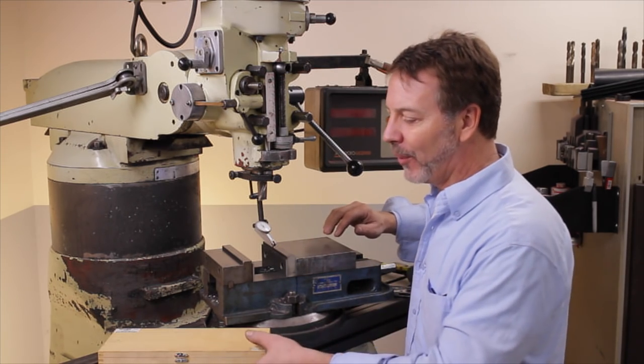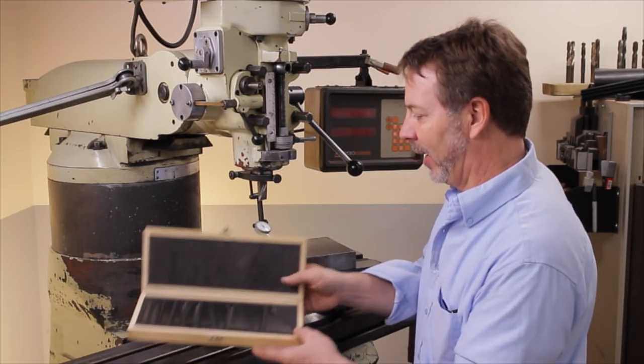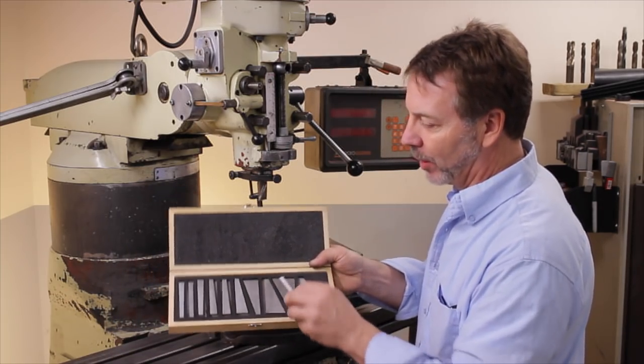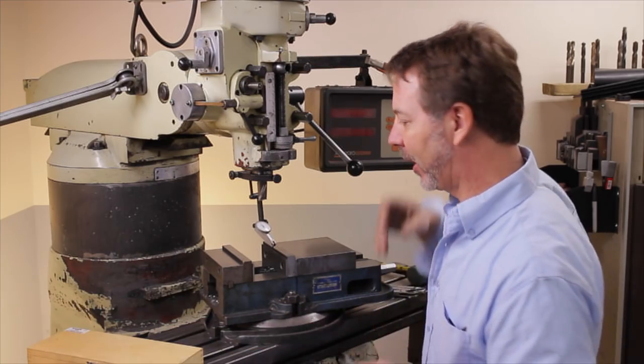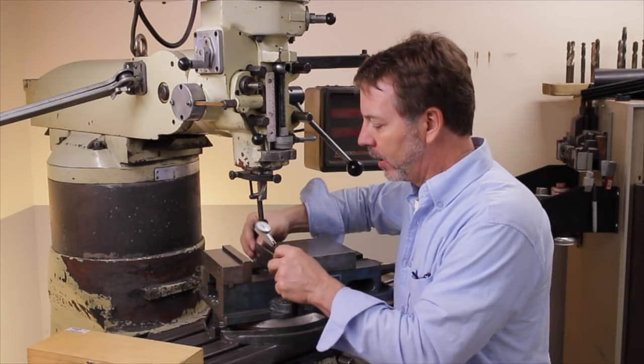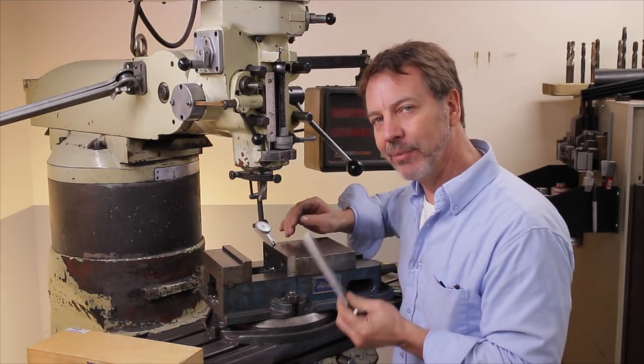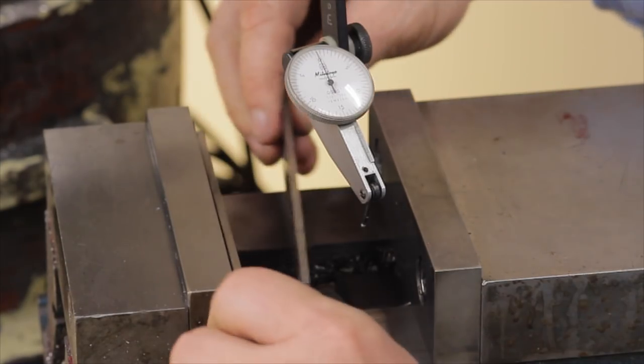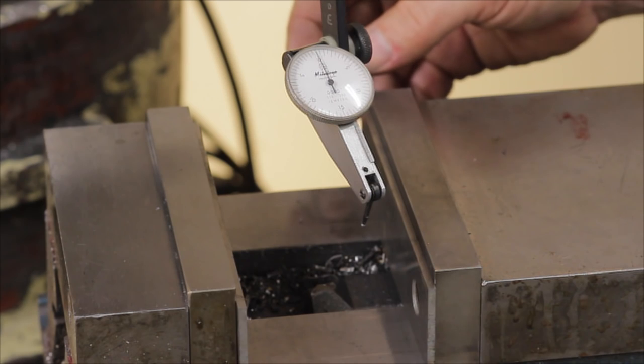So what I want to do is start out with a set of angled gauge blocks. We're going to pull out 30 degrees just because, well, why not? And we need a set of parallels. We want to get some fairly tall parallels, and you're going to see why here in a minute.